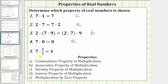Finally, we have seven times one-seventh equals one. Whenever we have a product equal to one, we are using the inverse property of multiplication, which is d, where seven and one-seventh are reciprocals of one another, or we can say one-seventh is the multiplicative inverse of seven. I hope you found this helpful.